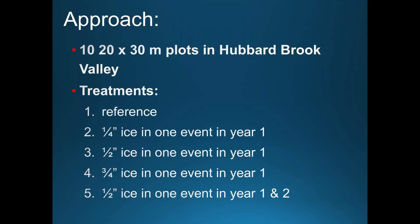For our approach in 2015, we set up 10 20-by-30 meter plots in the Hubbard Brook Valley. Treatments included replicated reference plots, quarter-inch ice in one event in one year, half-inch ice in one event in one year, three-quarters-inch ice in one event in one year, and half-inch ice in one event in two consecutive years. The purpose of this last treatment was to look at what happens if ice occurs in two consecutive years. A note that the half-inch ice in one year was approximately equal to the 1998 ice storm.